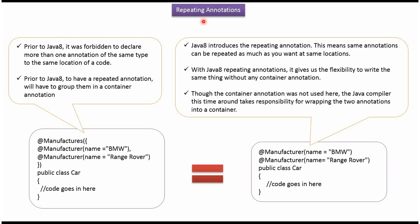In this video tutorial I will cover repeating annotation. Here I have defined the class Car. In the Car class I have applied more than one annotation with the same type. The type is Manufacturer. Here the Manufacturer annotation has been applied more than one time, so this is called repeating annotation.